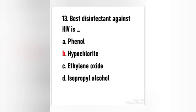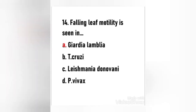Next question: Best disinfectant against HIV is — (a) phenol, (b) hypochlorite, (c) ethylene oxide, (d) isopropyl alcohol. The right answer is option B — hypochlorite is the best disinfectant against HIV. Next question: Falling leaf motility is seen in — (a) Giardia lamblia, (b) Trypanosoma cruzi, (c) Leishmania donovani, (d) Plasmodium vivax. The right answer is option A — falling leaf motility is seen in Giardia lamblia.